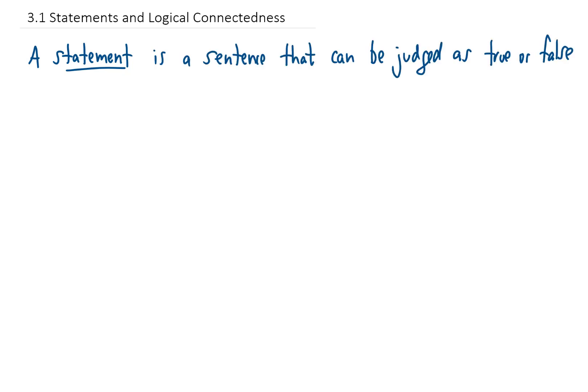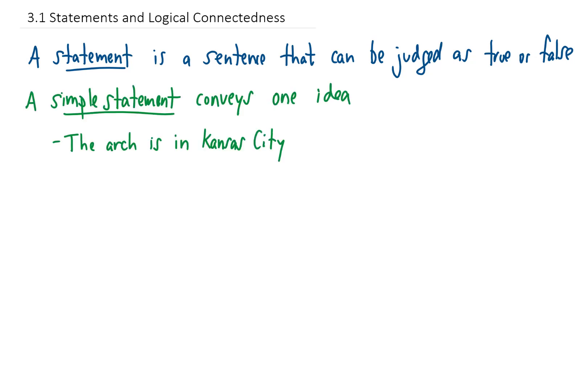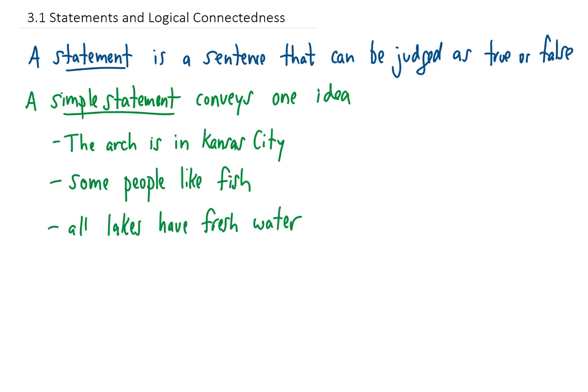We have simple statements and compound statements. A simple statement conveys a single idea. Here are a few examples of simple statements: the arch is in Kansas City, some people like fish, and all lakes have fresh water. Each one of these simple statements has a single idea that can be deemed to be true or false.